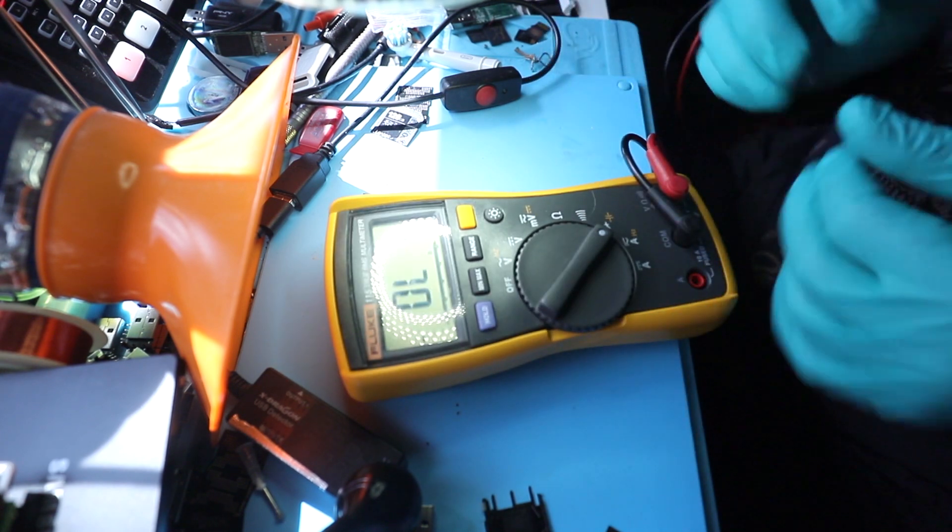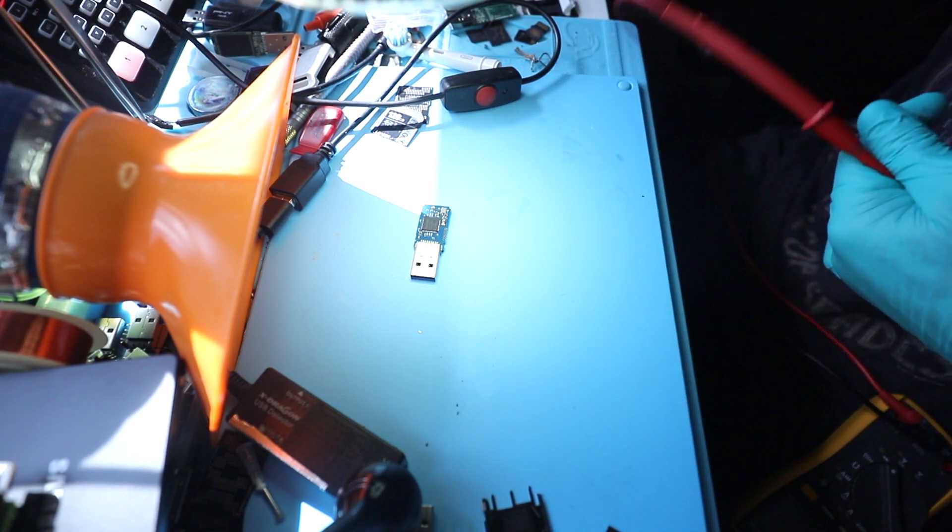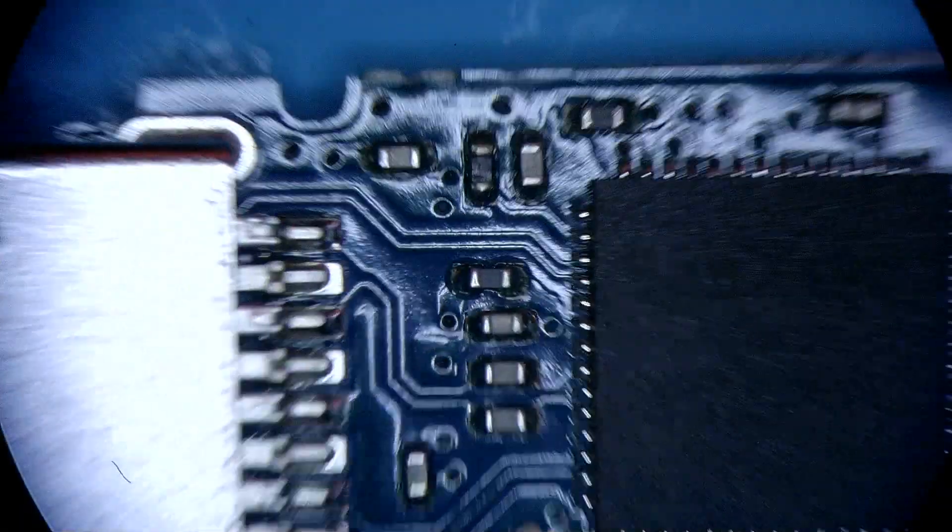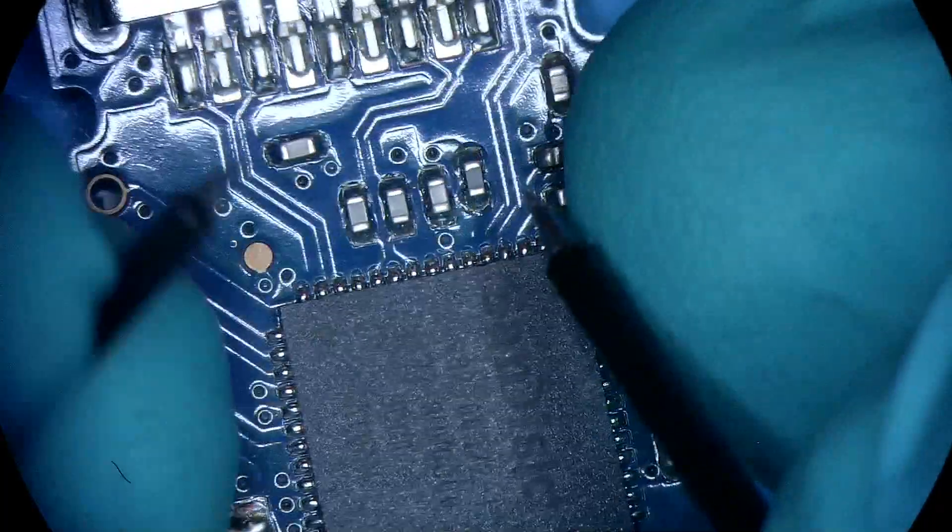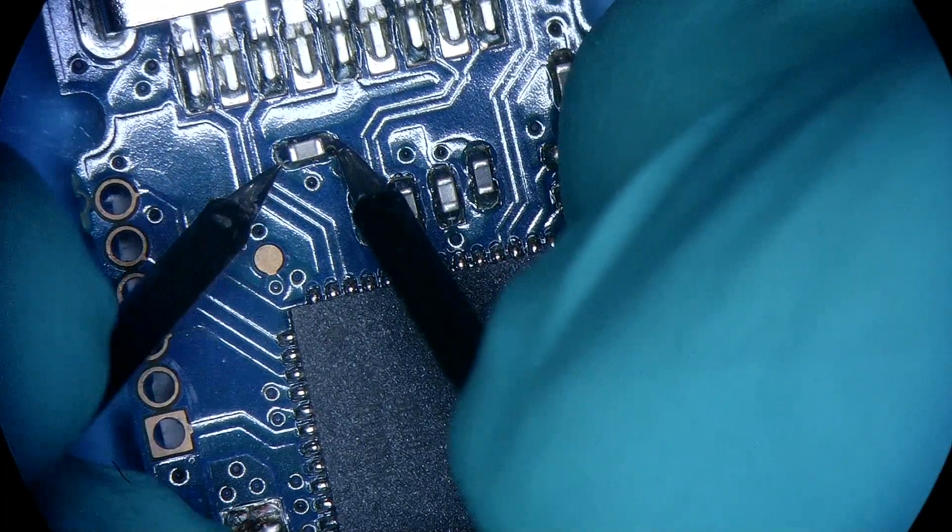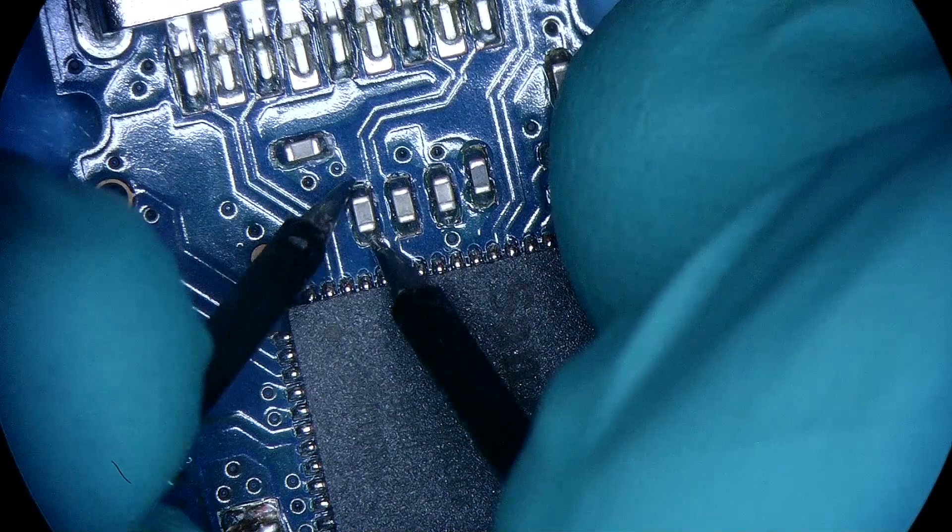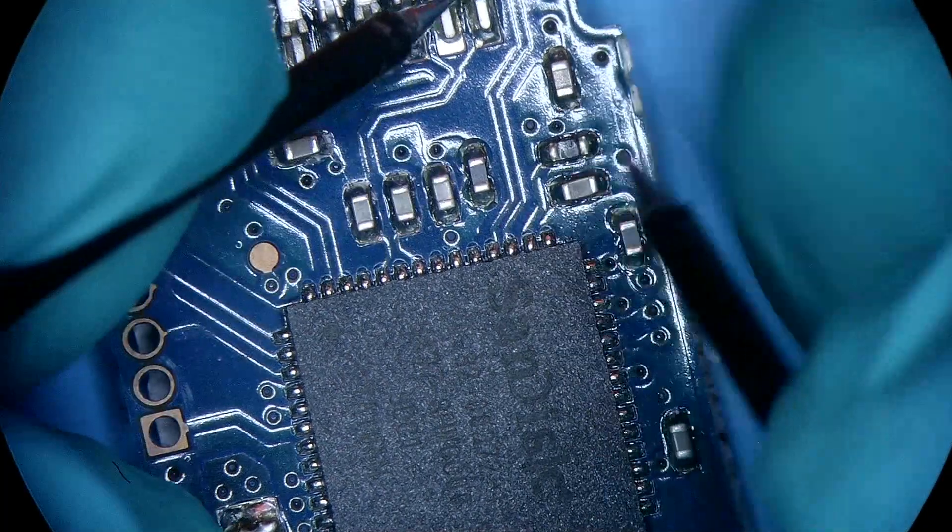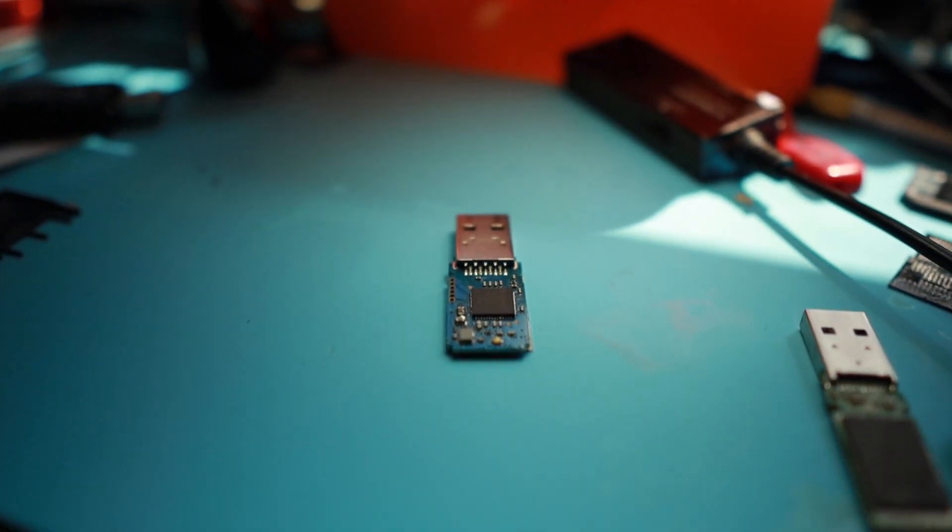This mode here for diodes, if we hit both probes on the component that is in short, it's gonna make a beep like this. So what we want to do, we want to probe all of the ceramic components that are up front here to find out if anything is sitting on the ground. We have this one, we have this one, and we have this one.